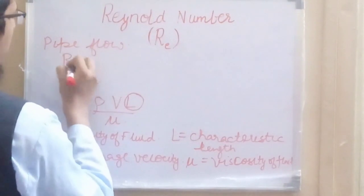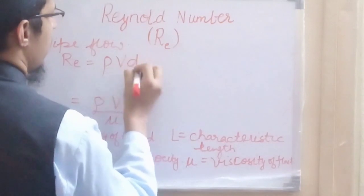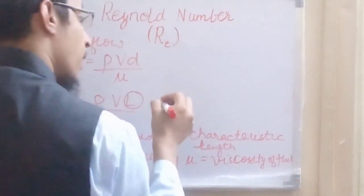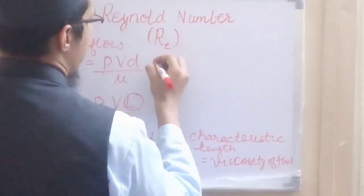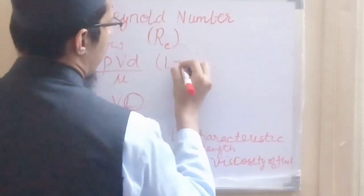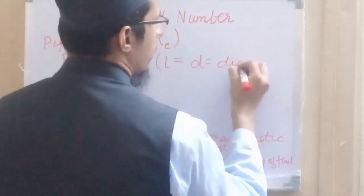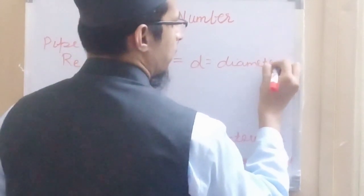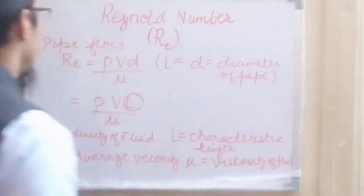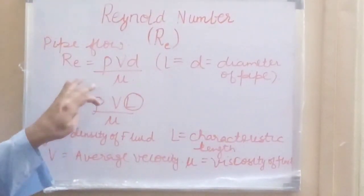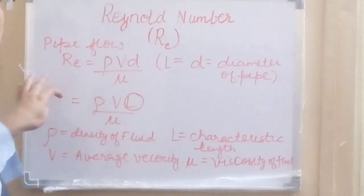For pipe flow, the Reynolds number is represented as rho·v·d divided by mu, where d is the diameter of the pipe. The characteristic length in case of pipe flow is equal to d, the diameter of the pipe. This form is used in most resources because Reynolds number is most prevalent in pipe flow.